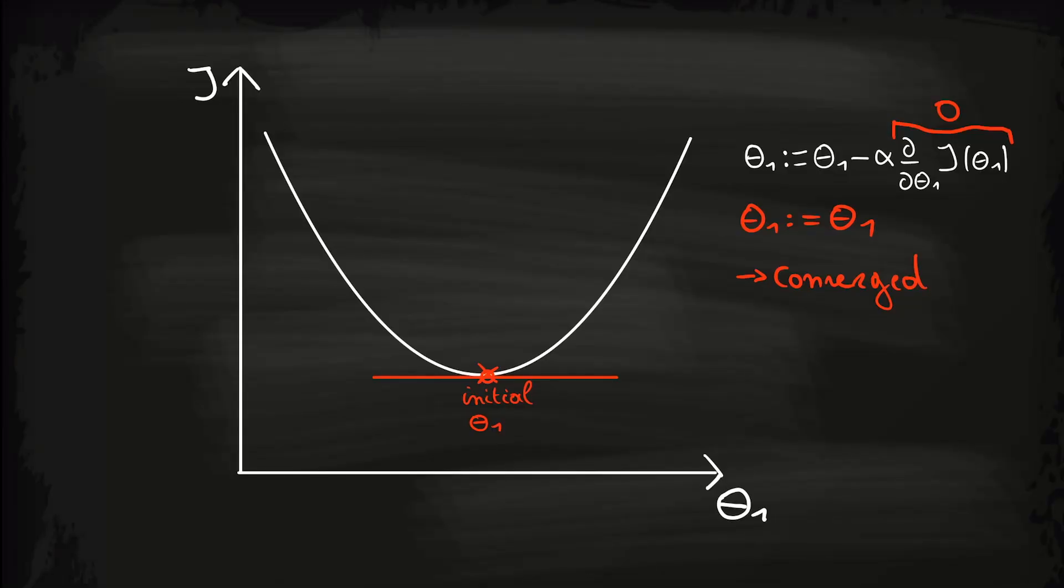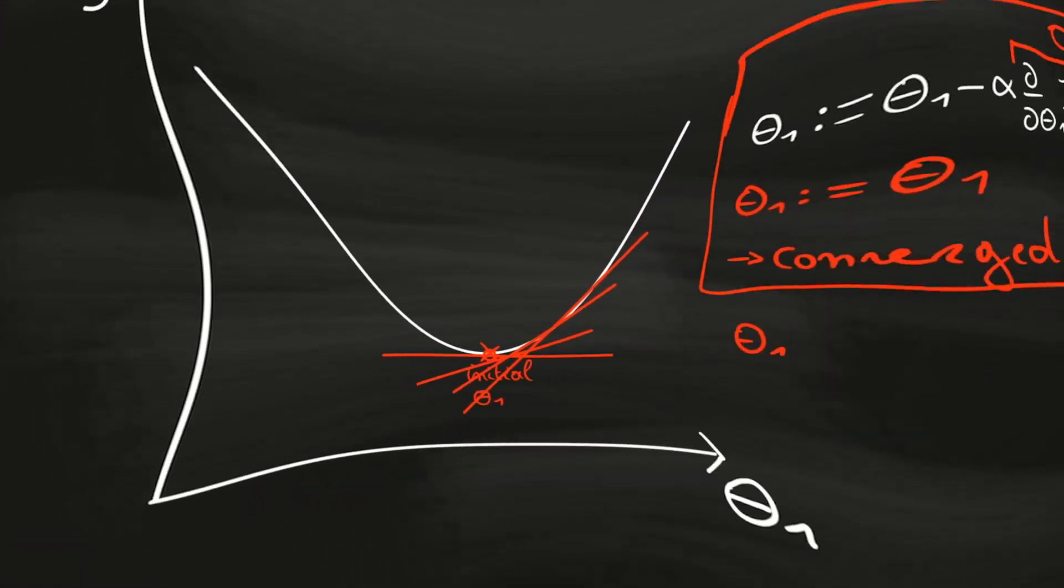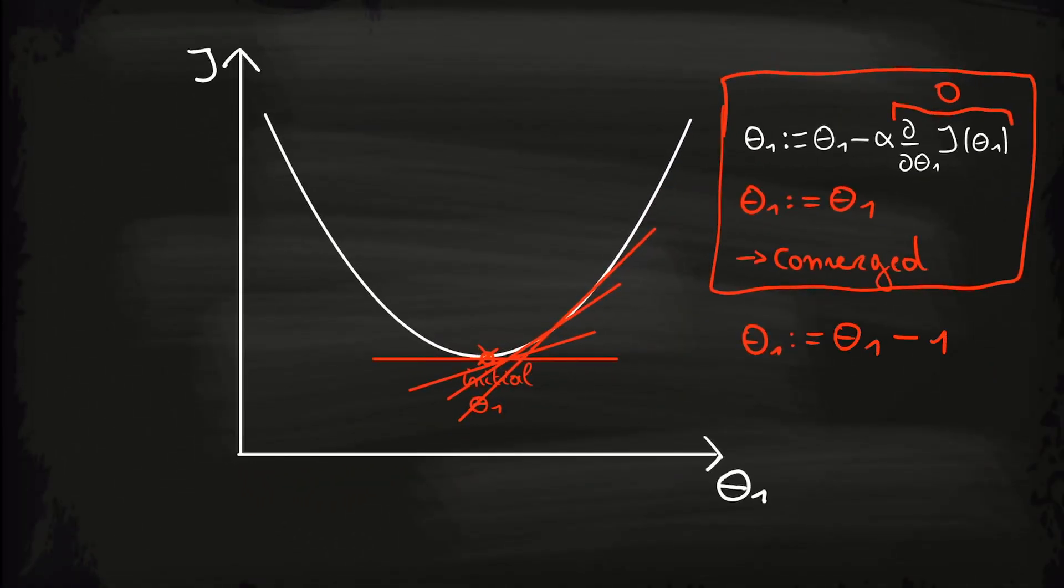If the slope becomes zero, we have converged to a local minimum. But if you look closer to this, you can see that when theta 1 comes closer to the minimum, the slope gets closer to zero. So if you look what this means in the mathematical formulation, it means that the value of theta gets updated with smaller and smaller increments or decrements when we approach the minimum.